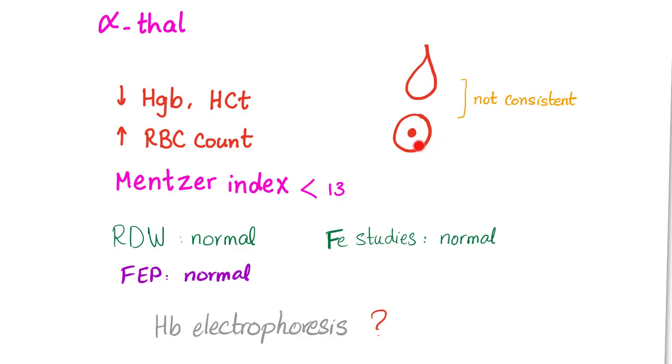Occasionally you will find target cells and teardrop cells, but they are not consistent in alpha thalassemia. Why teardrop cells? Because you have some macrophages eating parts of the RBC, leading to the teardrop cells.